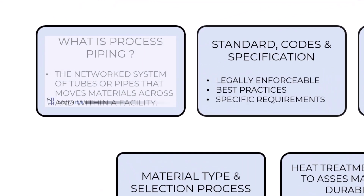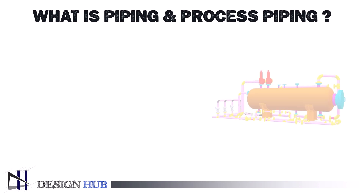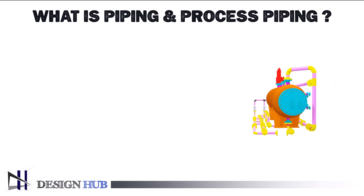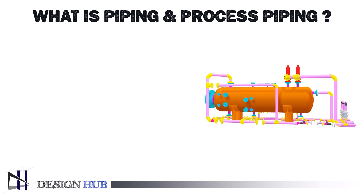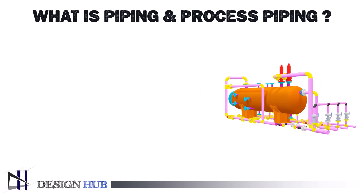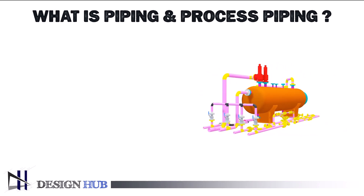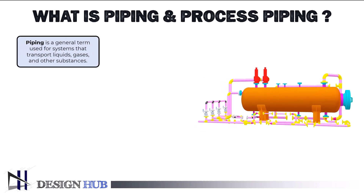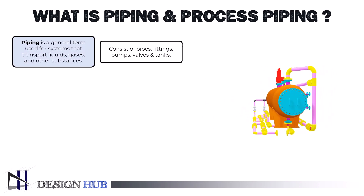Let's get started. First, let's see what is piping. Piping systems include pipes, fittings, pumps, valves, and tanks.